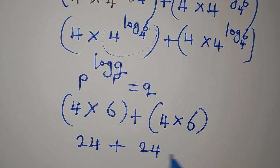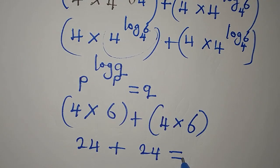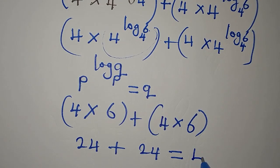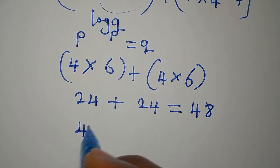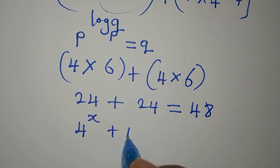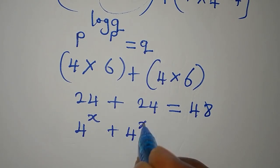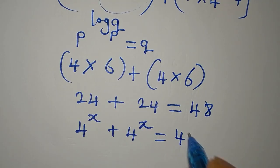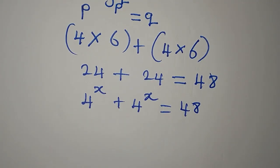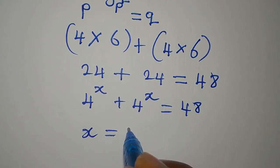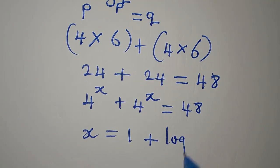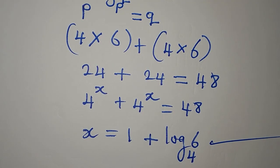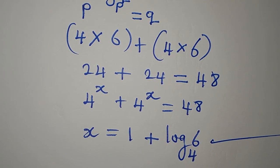So 4 times 6 is 24, plus 4 times 6 is 24, giving us 24 plus 24 equals 48. This confirms that x equals 1 plus log 6 to base 4 satisfies the original equation 4^x + 4^x = 48.